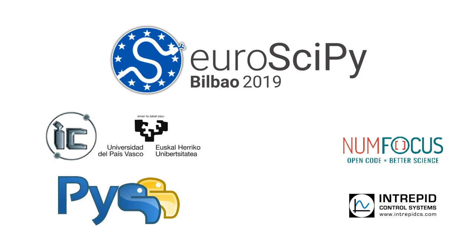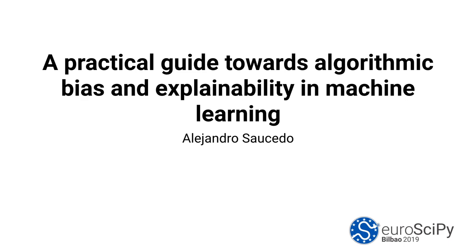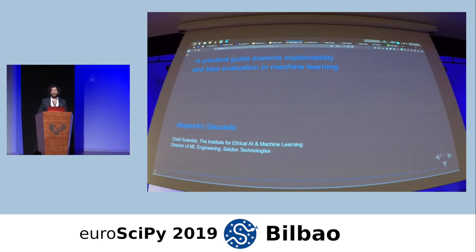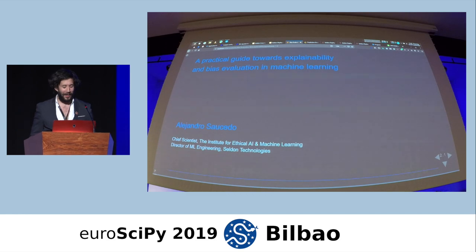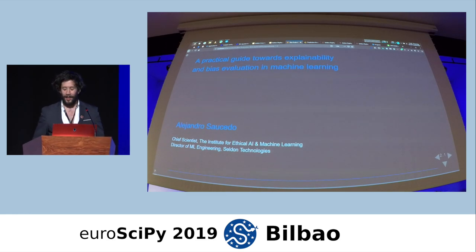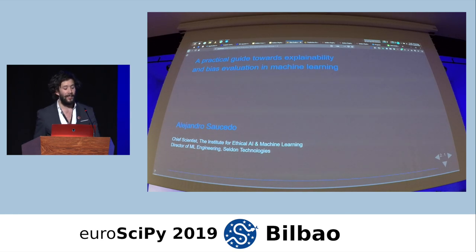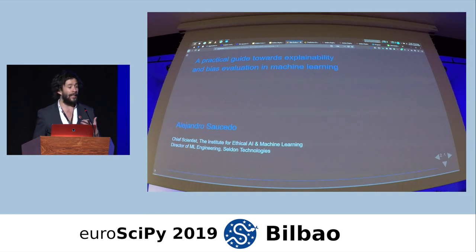And now we have a talk by Alejandro. Thank you so much, especially to the organizing team. EuroPyCon is always an incredible event. Today I'm going to be talking about a topic that has been gaining a lot of popularity from a more practical perspective, and this is a practical guide towards explainability and bias evaluation in machine learning. I am currently the chief scientist at the Institute for Ethical AI and Machine Learning, where we basically build standards and contribute to policy discussions that ensure the responsible development of machine learning systems.